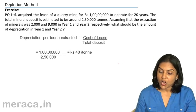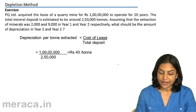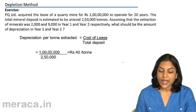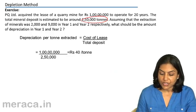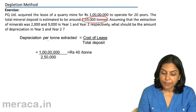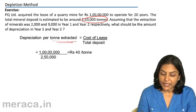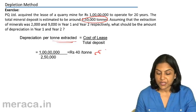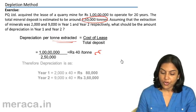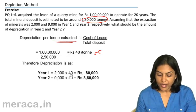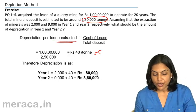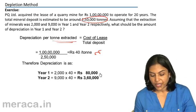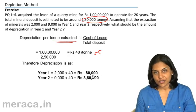Depreciation per ton would be the cost of the lease, which is 100 lakhs, divided by the total estimated deposit of 2,50,000 tons. Therefore, we get depreciation per unit or per ton extracted as rupees 40 per ton. The depreciation in year 1 would be 2,000 × 40 = ₹80,000, and in year 2 it would be 9,000 × 40 = ₹3,60,000.